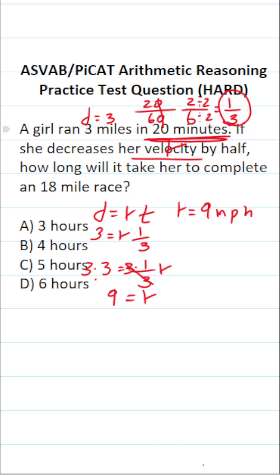That said, it says right here for the 18-mile race, she decreases her velocity by half. So what is half of 9 miles per hour? That's going to be 9 over 2. All right. So this is the velocity at which she runs the 18-mile race.